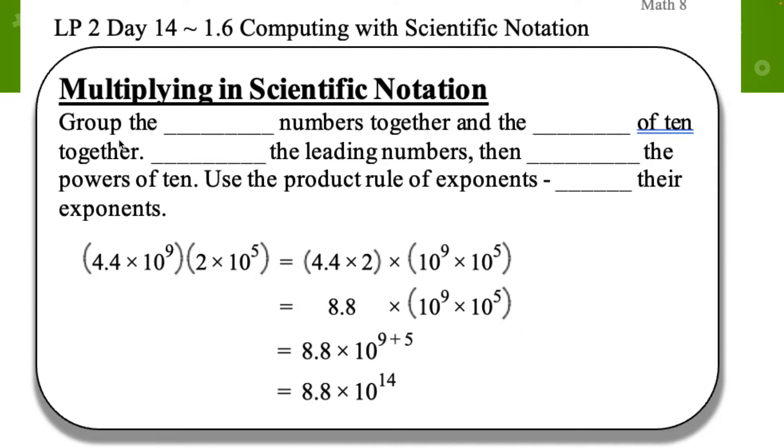So first, we're going to group the leading numbers together and the powers of 10 together. So we're going to kind of separate things out. Then we're going to multiply the leading numbers and then multiply the powers of 10. So we're going to use the product rule of exponents to add their exponents. So let's see what does that all mean.